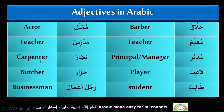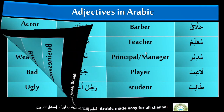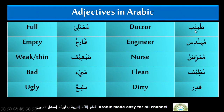Najjar — Carpenter. Jazjar — Butcher. Rajul Amal — Businessman. Khabib — Doctor. Mohandis — Engineer. Mumarrid — Nurse. Mumarrida — for Female Nurse.